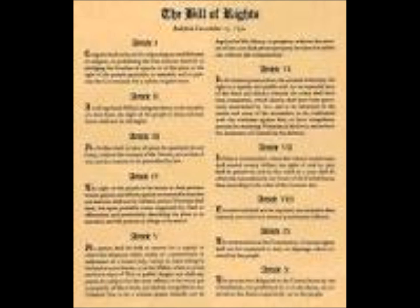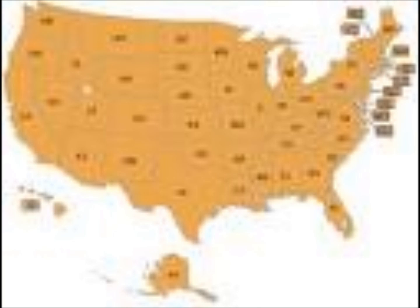The Ninth Amendment states that the list of rights described in the Constitution is not limited to the original rights and that the people still have all the rights that are not listed. The Tenth Amendment gives all powers not specifically given to the United States government in the Constitution to either the states or to the people.